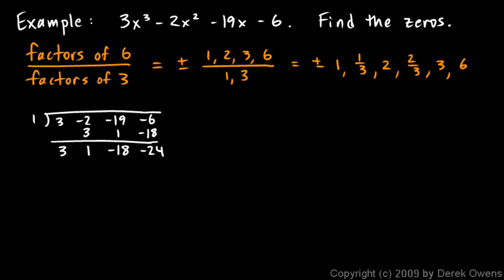So let's move over here and try the 2. So set up the synthetic division, 3, negative 2, negative 19, negative 6, and then here we go. 3 times 2 is 6, we add there and we get a 4, 4 times 2 is 8, and we add there and we get negative 11. Negative 11 times 2 is negative 22, and we add and we get negative 28. Well, that didn't work either.